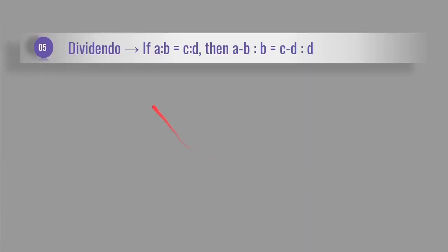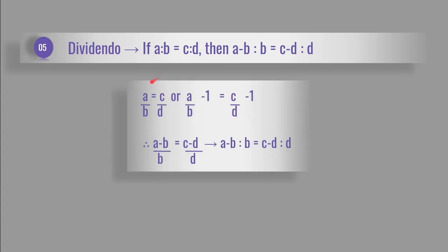Fifth, dividendo property. If A is to B is equal to C is to D, then A minus B is to B is equal to C minus D is to D. Here A over B is equal to C over D. Subtracting 1 from both sides: A over B minus 1 is equal to C over D minus 1. So A minus B over B is equal to C minus D over D by taking LCM. Therefore, A minus B is to B is equal to C minus D is to D.